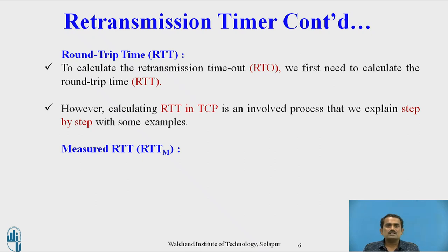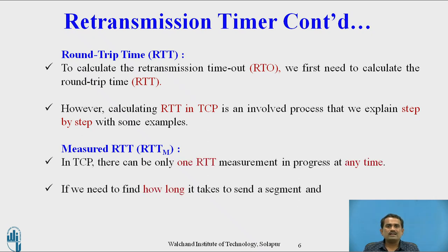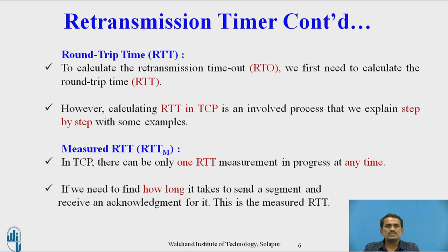The next point is measured RTT, denoted RTT_M, which indicates measured round trip time. In TCP, there can be only one RTT measurement in progress at any time. The measured RTT refers to how long it takes to send a segment and receive an acknowledgement from the receiver side.